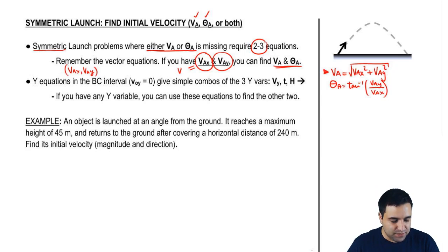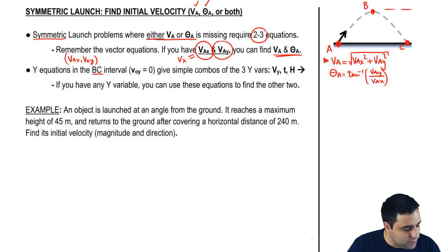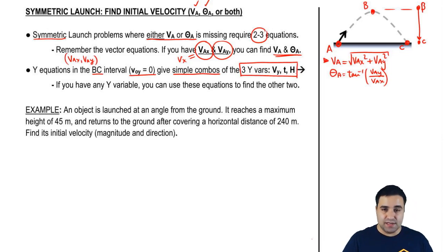Remember VAX is simply VX because VX never changes. Now to do this, I'm going to derive three new equations for you. Not new, but simplified versions of our motion equations that I think are going to be very helpful. So if you write Y equations in the BC interval, so this is A, this is B, and this is C. If you write equations in the BC interval, you're going to get very simple versions of those equations because the initial velocity is zero, and what you're going to have is simple combinations of all of your three equations.